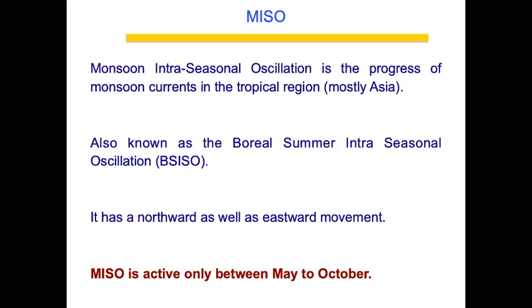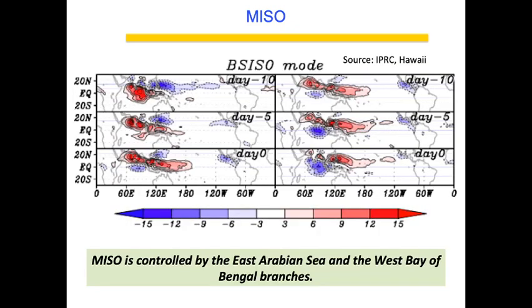That is precisely why we call the Northeast monsoon a 'rogue monsoon' — it doesn't have clean features. MISO, also known as the Boreal Summer Intra-Seasonal Oscillation, has both northward and eastward movement and is active between May to October. MISO moves north and south during the monsoon period, bringing active and break phases, and is one of the primary reasons why Southwest monsoon is highly dominant and bountiful.